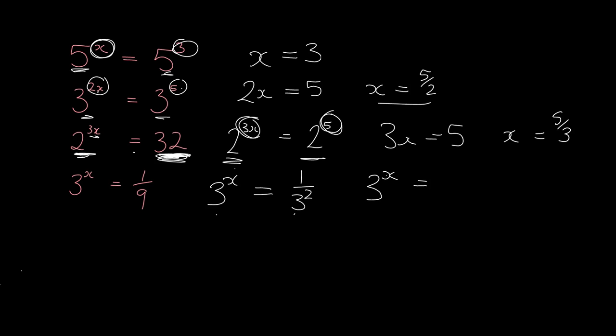1 over 3 squared is the same as 3 to the minus 2. Now we've got same base on either side, so we can just compare the exponents and we get x is minus 2.